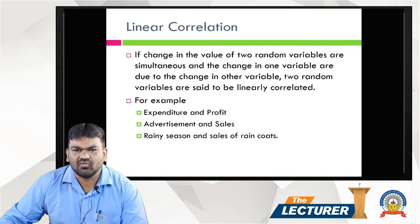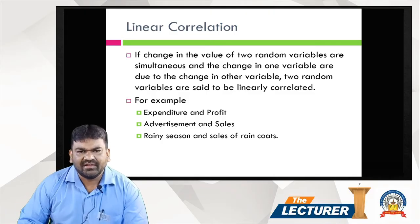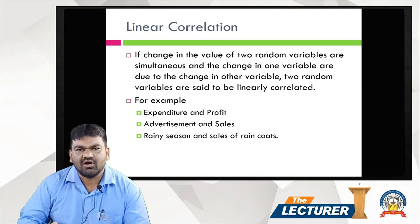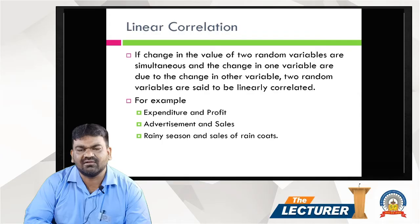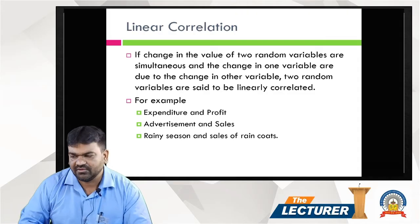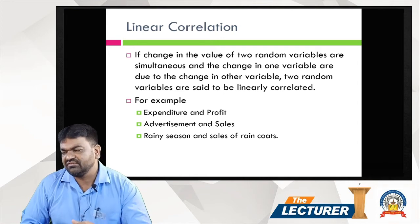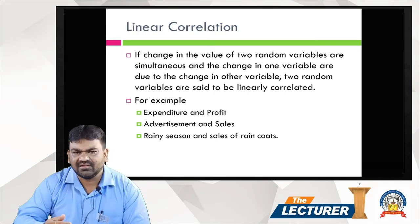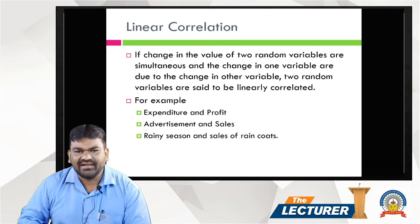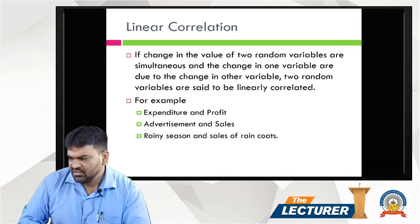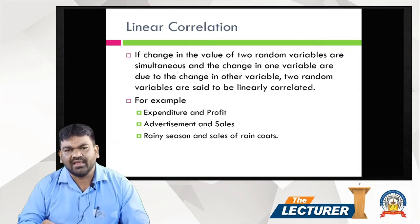Linear Correlation: if the change in the value of two random variables are simultaneous, one affects the other. If change in the value of two random variables are simultaneous due to the change in other variables — for example, petrol price and car sales. If petrol price increases, then car sales automatically decrease. For example, at 80 Rs. per liter petrol price, people reduce car usage. Car sales and petrol price are both interlinked variables.